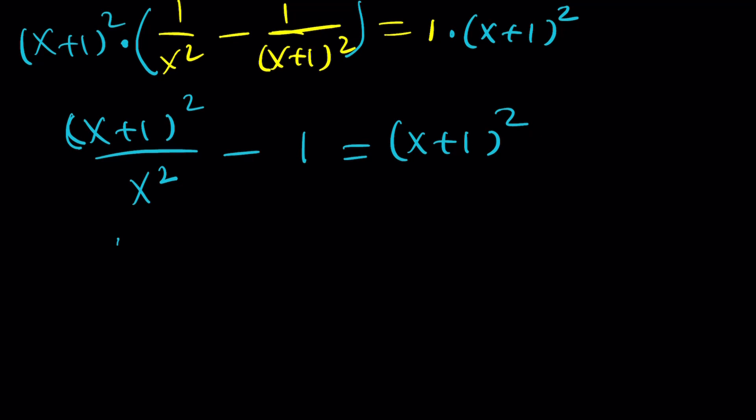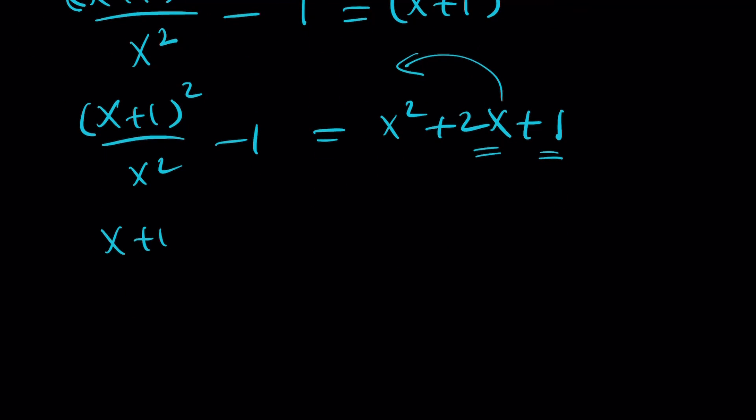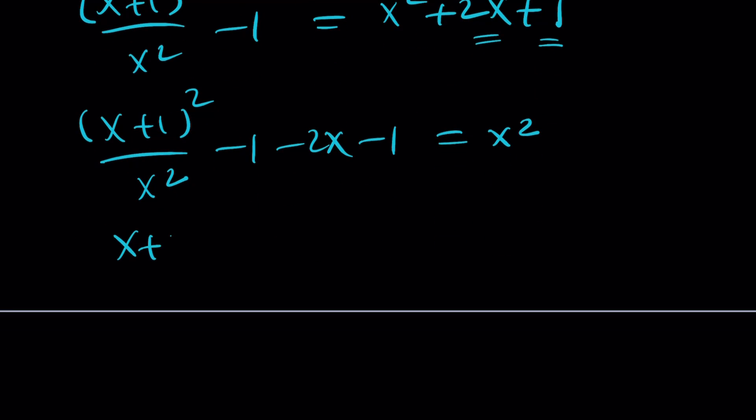Now let's go ahead and simplify this. I'm going to keep the left-hand side pretty much intact for a while. Now, if you expand this, you're going to get x squared plus 2x plus 1 from x plus 1 squared. Make sense? Now I want to bring the 2x and the 1 over here to the left-hand side and leave the x squared on the right-hand side. So we're going to do the following: x plus 1 squared over x squared minus 1 minus 2x minus 1 equals x squared.